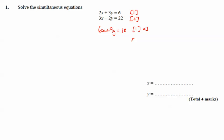And then take equation 2 and I'm going to multiply that by 2. So 3x times 2 is 6x minus 4y equals 44.